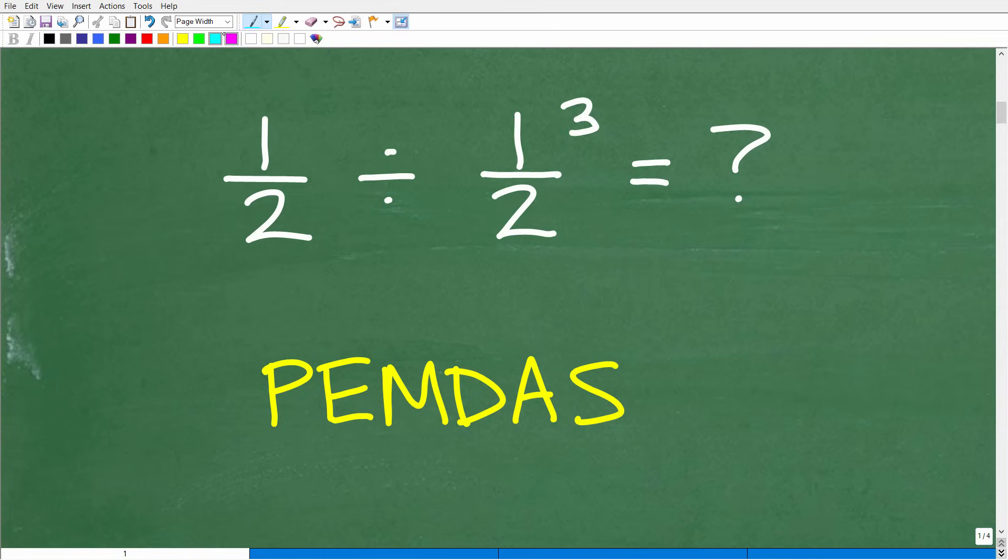So, in other words, I have 1 half divided by 1 half cubed. I could do this problem in two ways. I could do this first, 1 half cubed, figure that out, and then I could take 1 half and divide it by the answer of this. Or I could be like, I have 1 half divided by 1 half. I could figure this out, get the answer to that, and then I can take that to the third power. So, I have two approaches I could take to do this problem. Obviously, one is right and one is wrong.